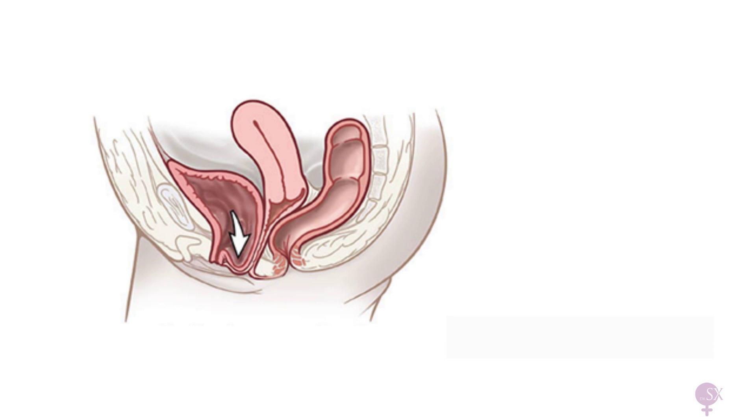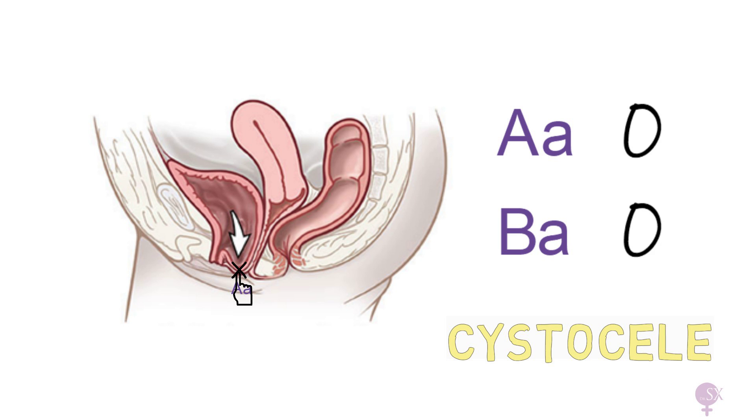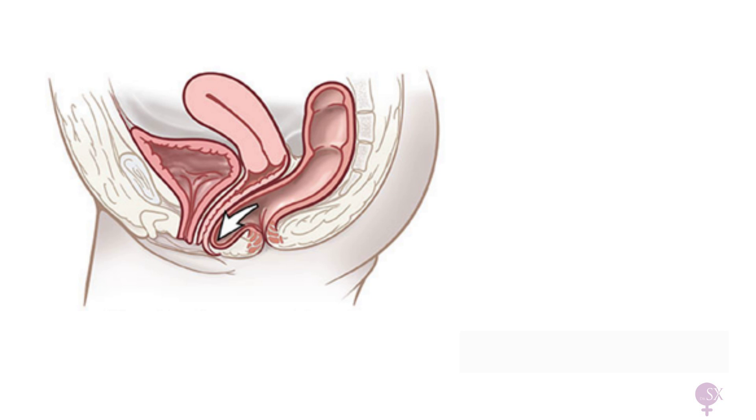Here, as you can see from this picture, we've got a cystocele as the bladder is descending. But how is this presented on POP-Q? Our Aa is over here, so at zero. The most distal point of Ba is also at zero. Therefore, these measurements are representing a cystocele.